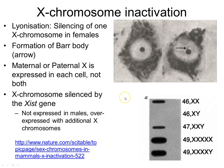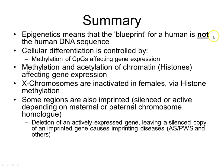X inactivation occurs in females: in any cell with two X chromosomes, one is always silenced. This is done randomly early in embryogenesis so that only one X chromosome is expressed in females. This silencing occurs via histone H3 lysine 27 trimethylation, which silences that X chromosome.